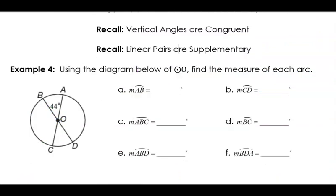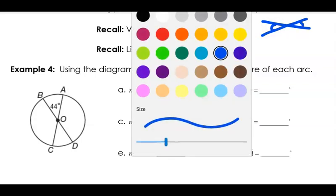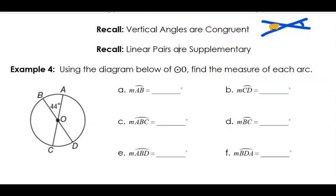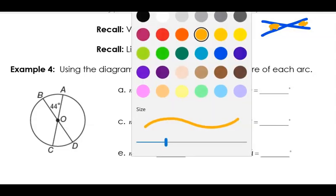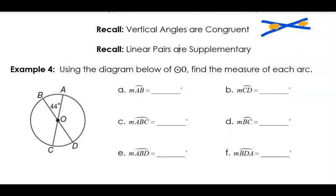The first thing we need to remember: vertical angles — ones that are across what I call the V from each other — they have the same measurement. And if I have two angles on a line, they're a linear pair, and together those are going to add up to 180 degrees. So this is going to help me figure out the missing pieces in this situation.